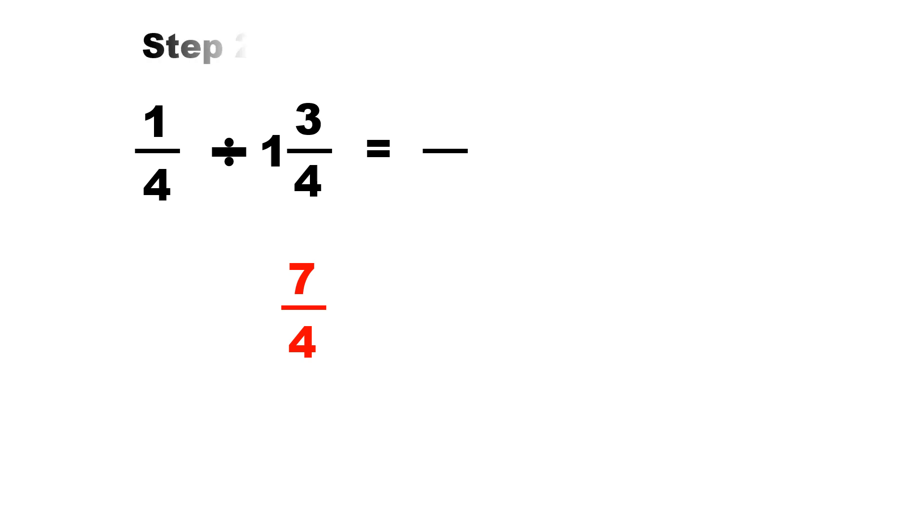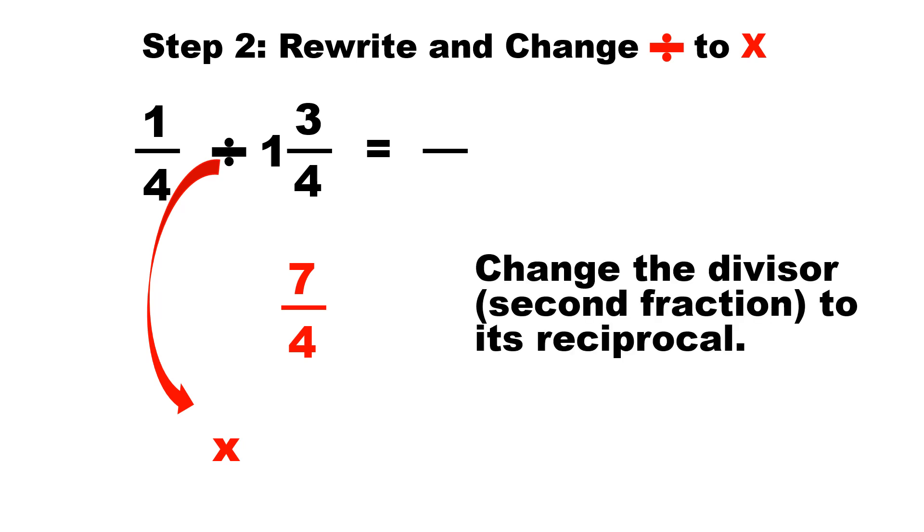Step two is we will rewrite and change the division symbol to a multiplication symbol. Since we're going to rewrite the fraction down here below, we'll change it to multiplication and write it down here. Next, what we do is change the divisor, which is the second fraction, to its reciprocal. Basically a fancy way of saying make the fraction upside down.